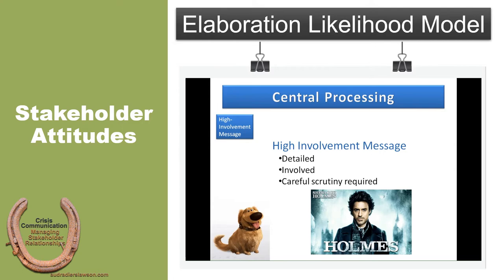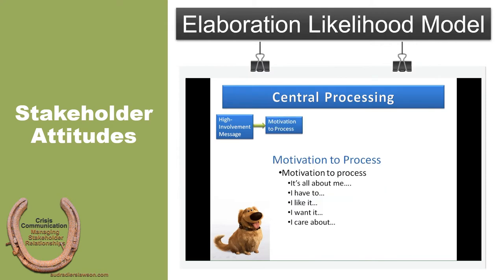Ideally, it's a campaign we want people to think and care about, so they're engaged by a high involvement, detail-oriented message. But in order for our message to work, we have to have a motivation to process it. Whether we actually read, are involved, and carefully scrutinize the message is based in part on our motivation. Our motivation to process is all about me — I have to, I like, I want, or I care about something. Messages using the ELM are very focused on the importance of individual motivation. It might be our motivation to take care of others, but it taps into whatever moves us as individuals. A high involvement message, then, focuses on audience motivation — not only that the audience is already inclined to be engaged, but that the message itself also produces that engagement.